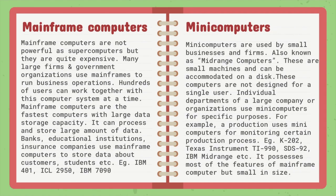Mainframe computers are not as powerful as supercomputers but are quite expensive. Many large firms and government organizations use mainframes to run business and operations. Hundreds of users can work together with this computer at a time. Mainframe computers are the fastest computers with large data storage capacity and can process and store large amounts of data. Banks, educational institutions, and insurance companies use mainframe computers to store data about customers, students, etc. Examples include IBM 401, ICL 2950, and IBM 7090.